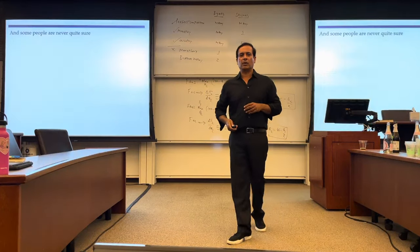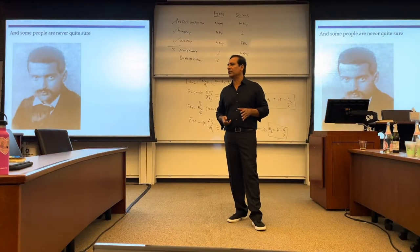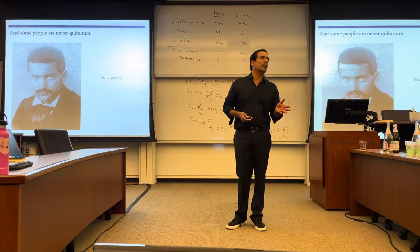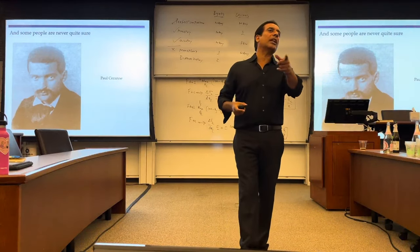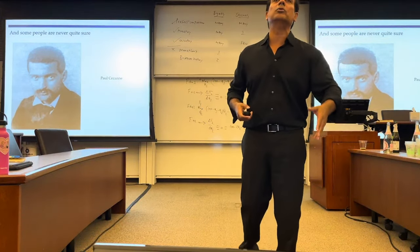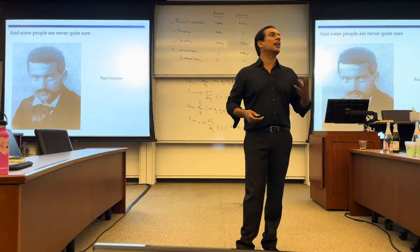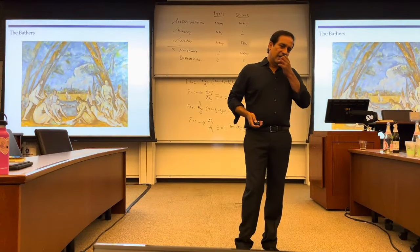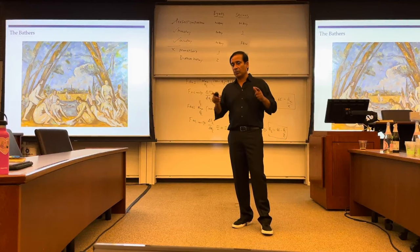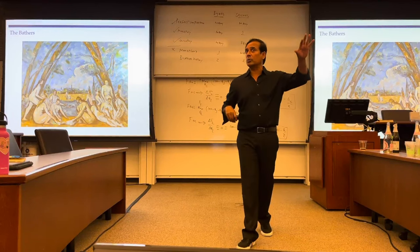But here's the other model. Some people are never quite sure. I put myself in this category, but I'm not Cézanne. This is Cézanne. Paul Cézanne was never sure what he was trying to do. His model was, I don't know what I'm trying to do till I do it. But I am discovering through what I do, what I want to do and what I should be doing. It's a different model for what guides our life. And this is one of the more famous paintings. He had his biggest success, not during his life, but his most successful pieces of work were things he put together at the age of 60. Whereas for Picasso, it was the age of 20.